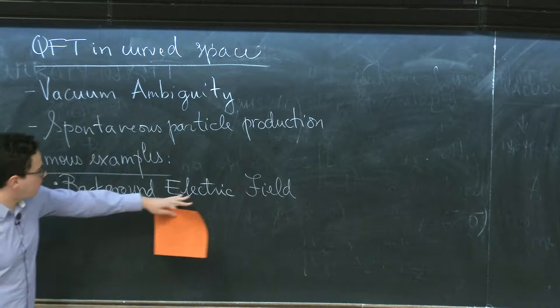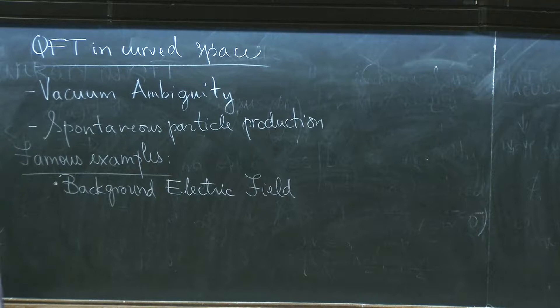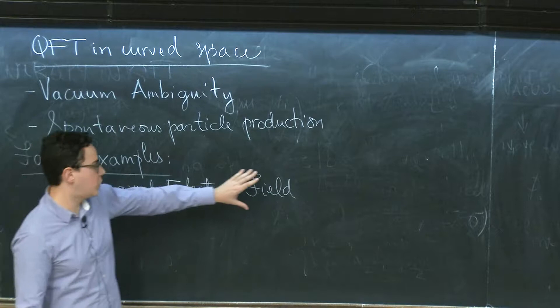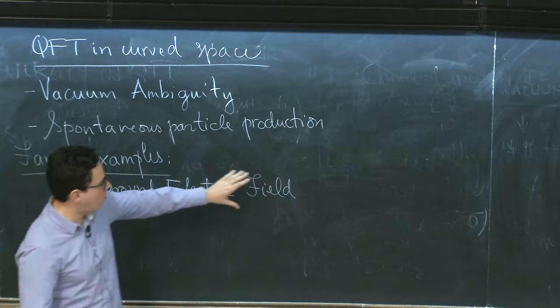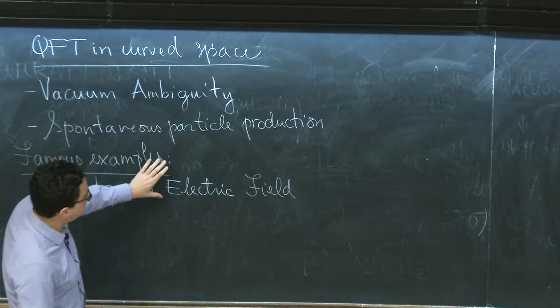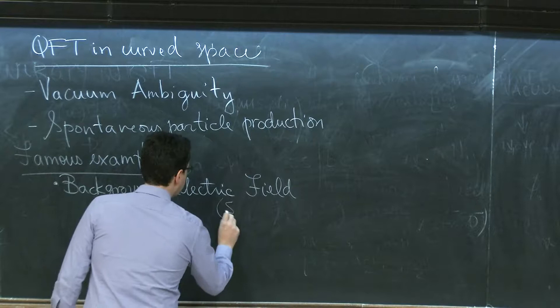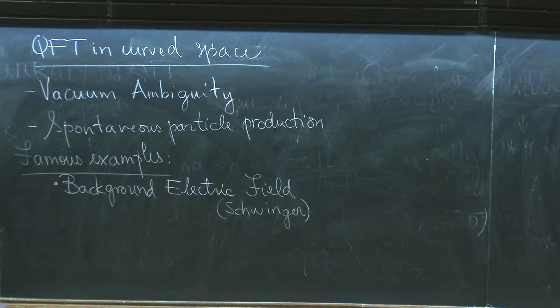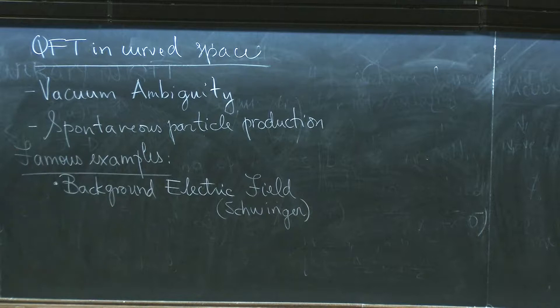Probably the first example is that of a background electric field, which is more or less as old as quantum field theory. It was originally done by Euler and Heisenberg, then Weisskopf, Salter — but this example is usually associated to the name of Schwinger. If you never read his paper where he does this calculation of particle production in a background electric field, it's a beautiful piece of work. It's part of the reason why he got the Nobel Prize, so I recommend that you read this paper.